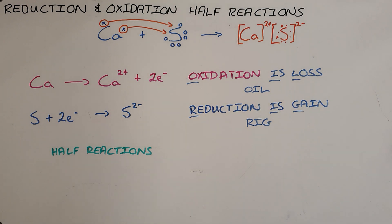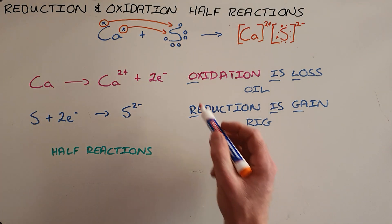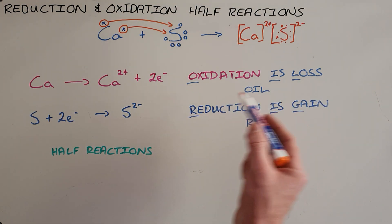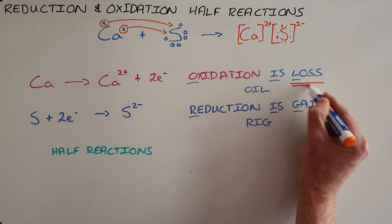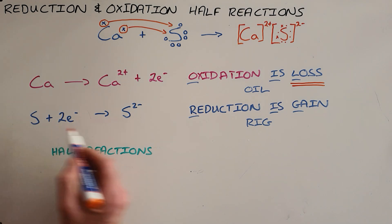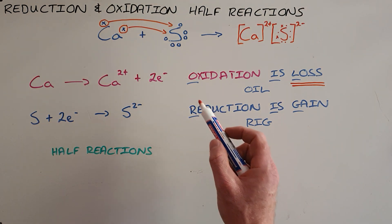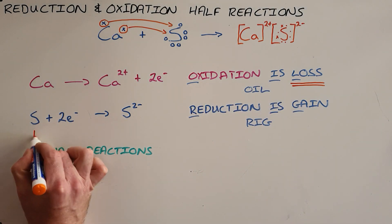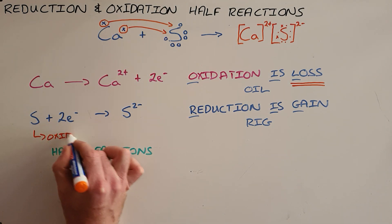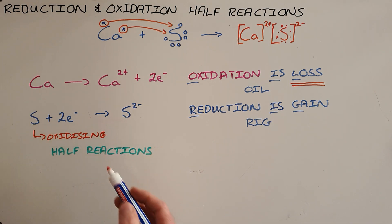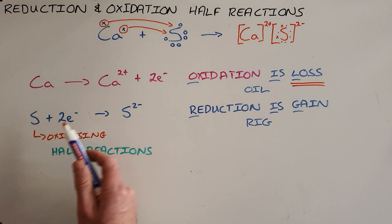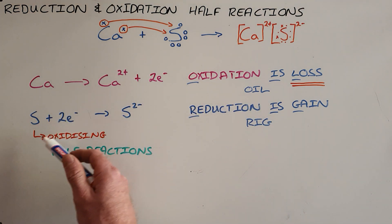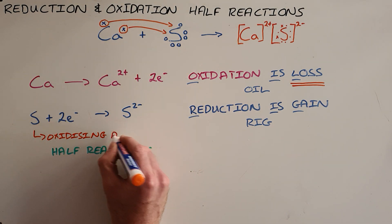Another term that is important in this section is the oxidizing agent. We know that calcium is undergoing oxidation because it loses its electrons, but it can only undergo oxidation — meaning it can only lose those electrons — because sulfur is able to gain those electrons. So we say that sulfur is allowing oxidation to happen, or that sulfur is the oxidizing agent. Sulfur is the oxidizing agent because it is taking the electrons from calcium, which allows calcium to be oxidized, and therefore sulfur is enabling the oxidation.